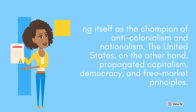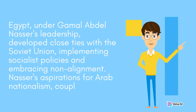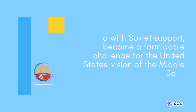Egypt, under Gamal Abdel Nasser's leadership, developed close ties with the Soviet Union, implementing socialist policies and embracing non-alignment. Nasser's aspirations for Arab nationalism, coupled with Soviet support, became a formidable challenge for the United States' vision of the Middle East.